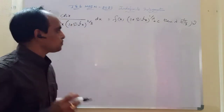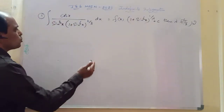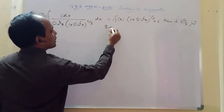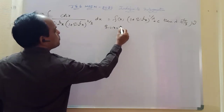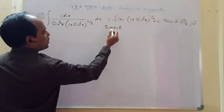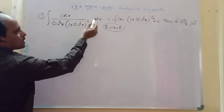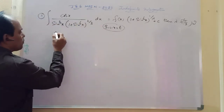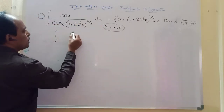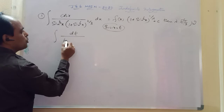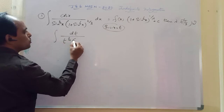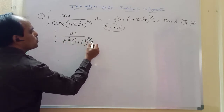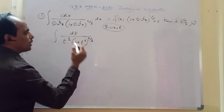So instead of doing it directly, let us use the substitution: let sin x = t. If sin x = t, then cos x dx = dt. After substitution, the integral becomes dt divided by t³ into (1 + t⁶) to the power of 2/3.